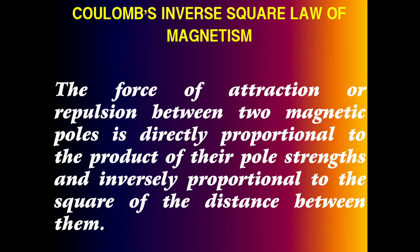Good afternoon students. This is Coulomb's Inverse Square Law of Magnetism from your Tamil Nadu lesson, 12th standard physics. The statement of this law: the force of attraction or repulsion between two magnetic poles is directly proportional to the product of their pole strength and inversely proportional to the square of the distance between them.